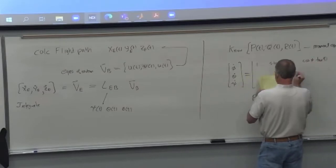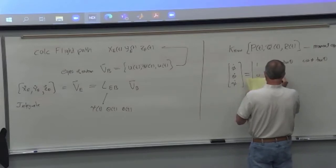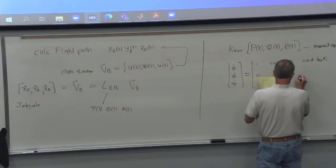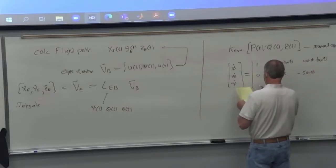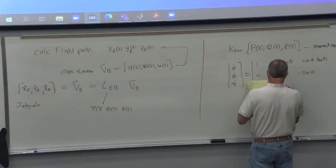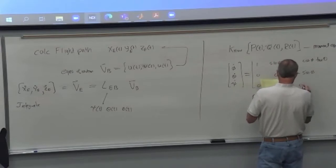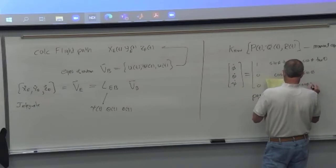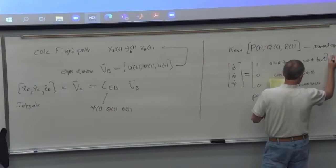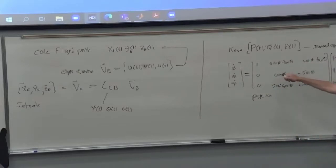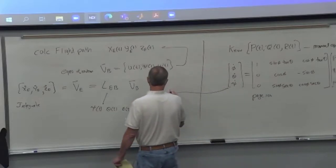The equations that relate those are given in the book. They're called kinematic equations, page 100. So this is how you get from P, Q, and R to psi dot, theta dot, phi dot, and then you can integrate these to get your Euler angles that go into here.